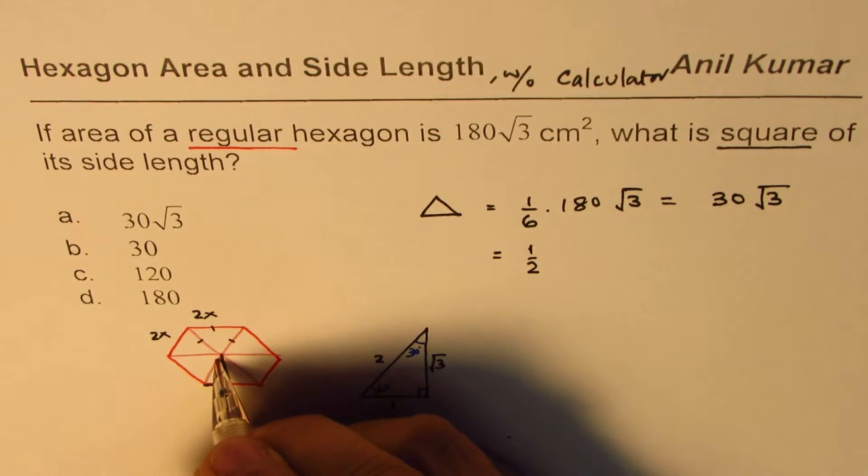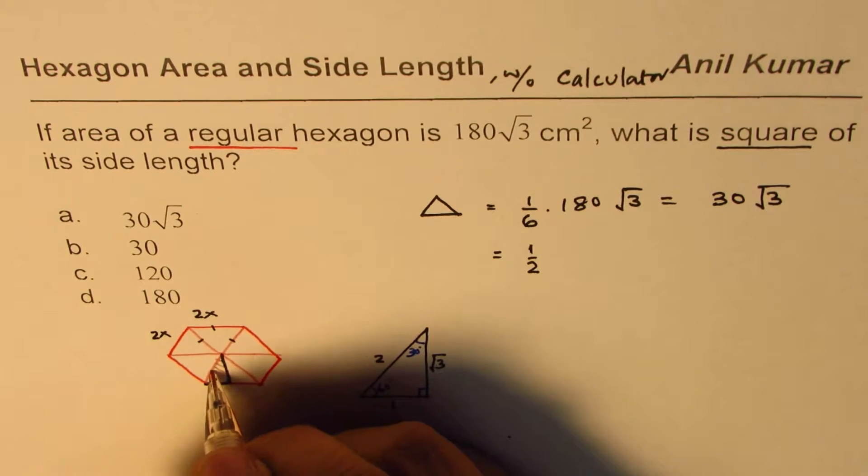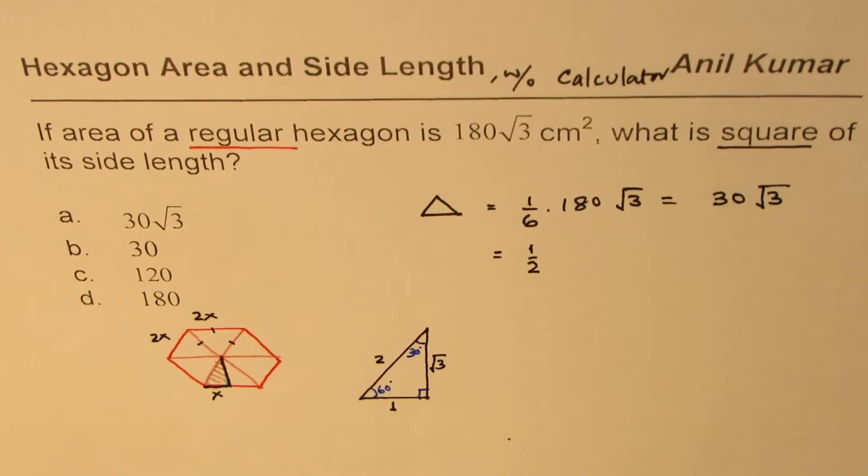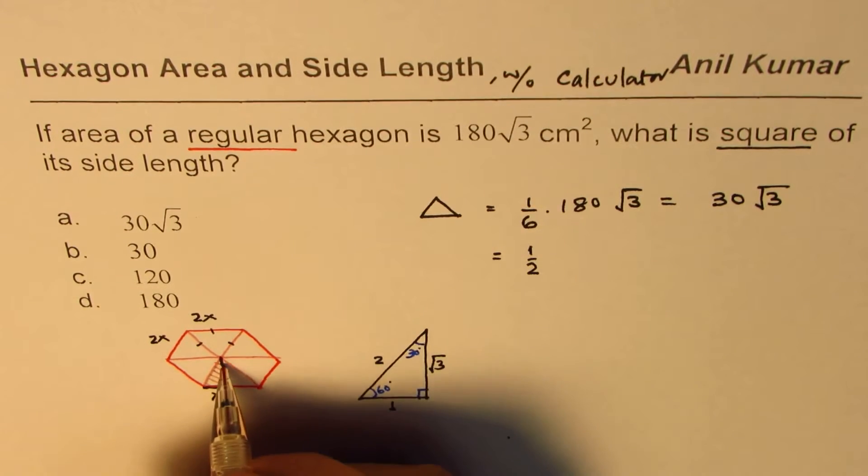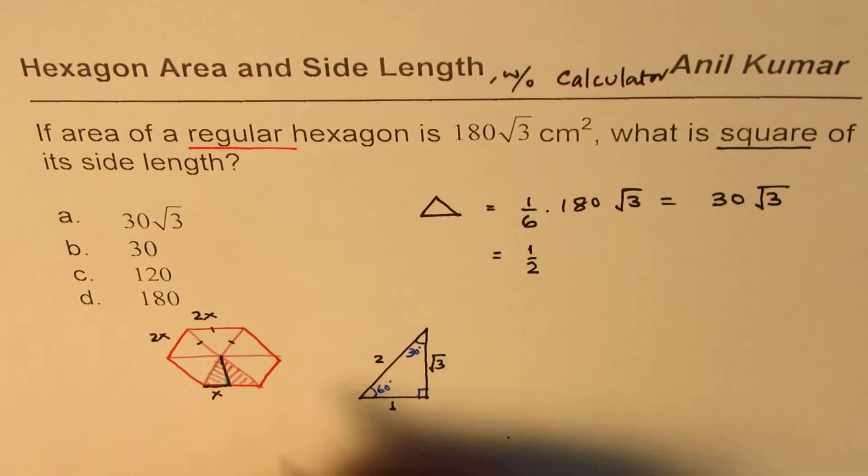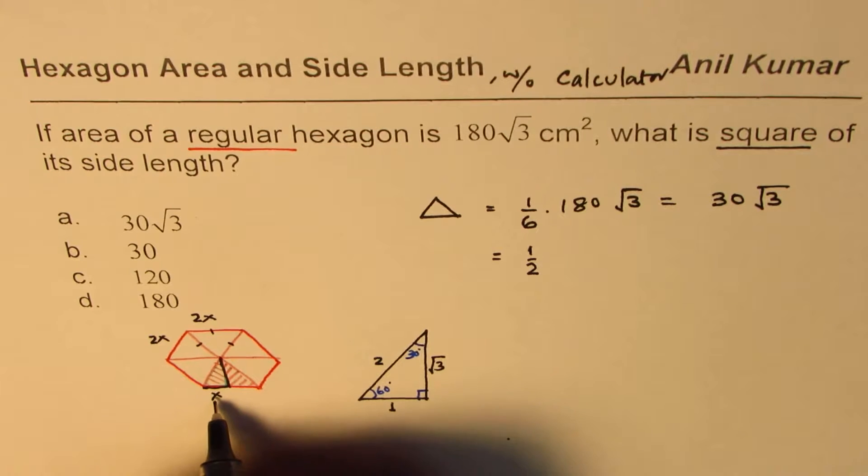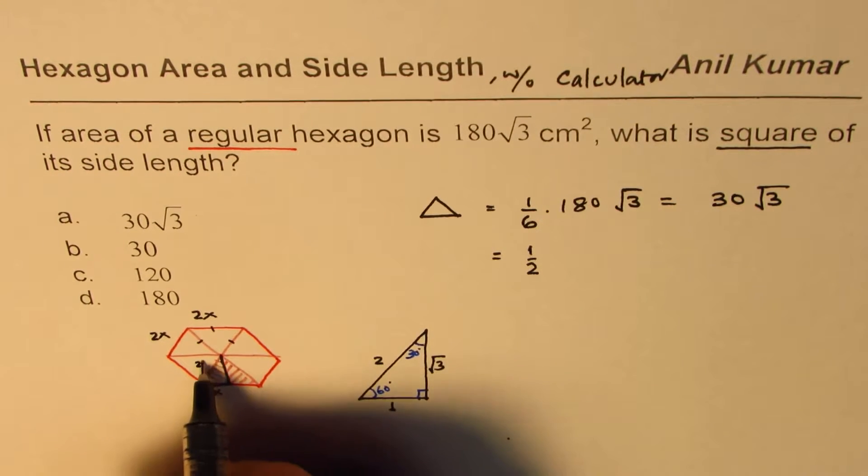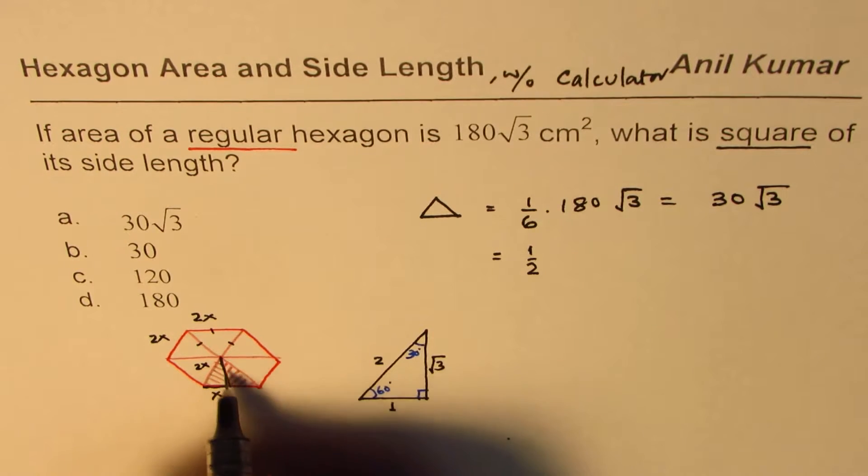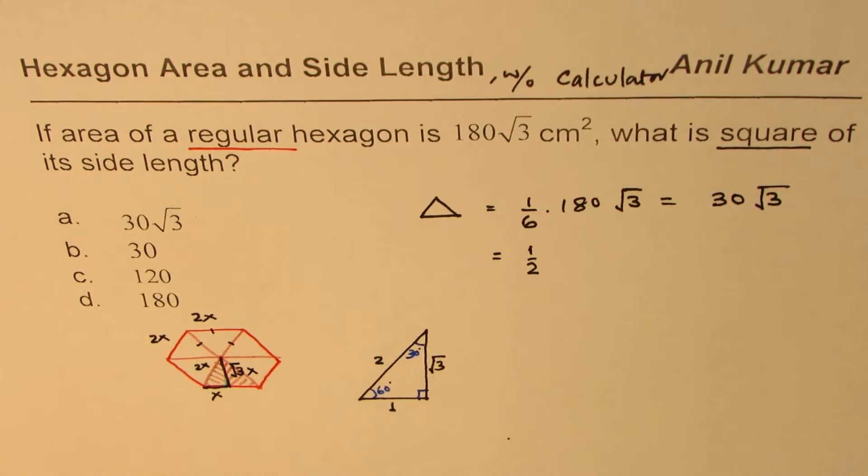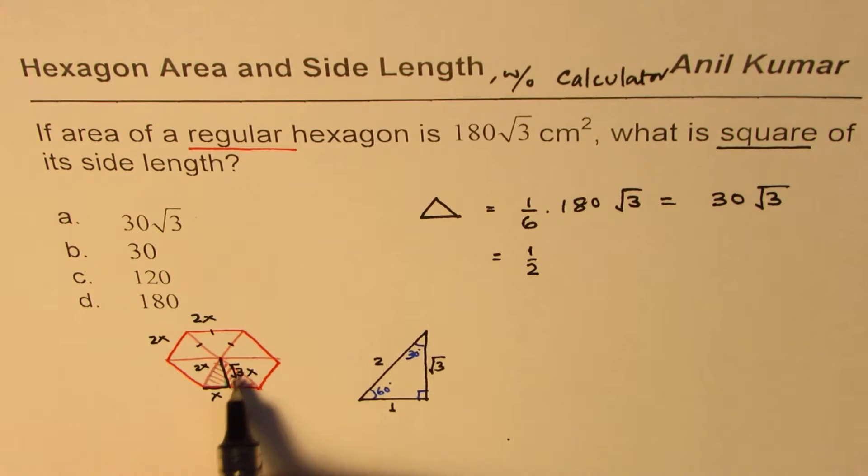So each side is 2x, but think about this triangle: if x is this side, 2x is this side total. So half is x, and the height will be square root 3 times x.